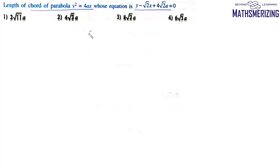We have this parabola and the chord with equation y - √2x + 4√2a = 0. We need to find the length of this chord. Suppose the endpoints are A and B.